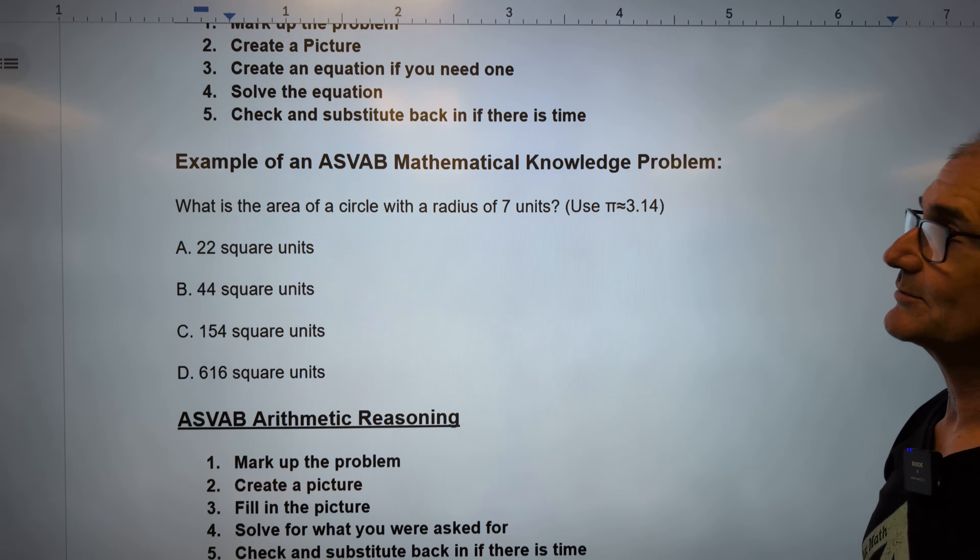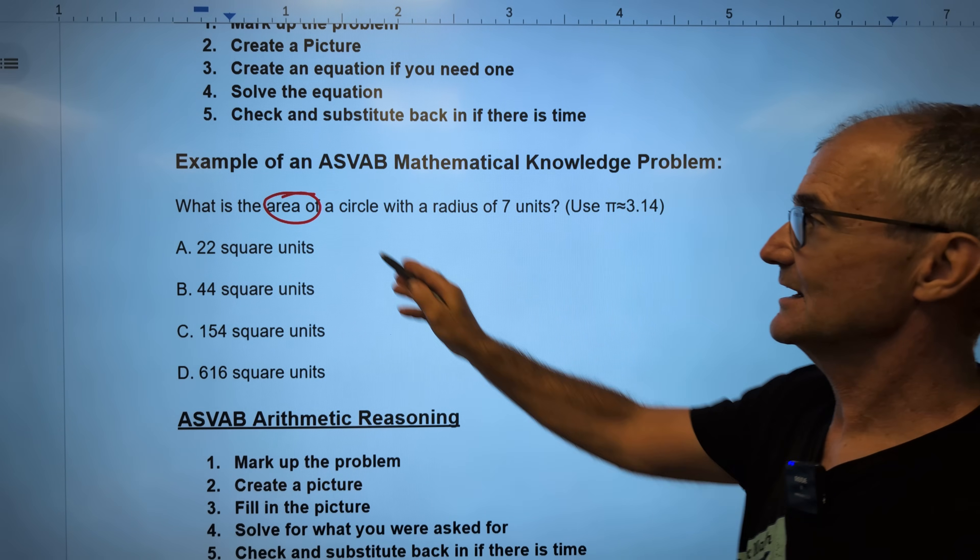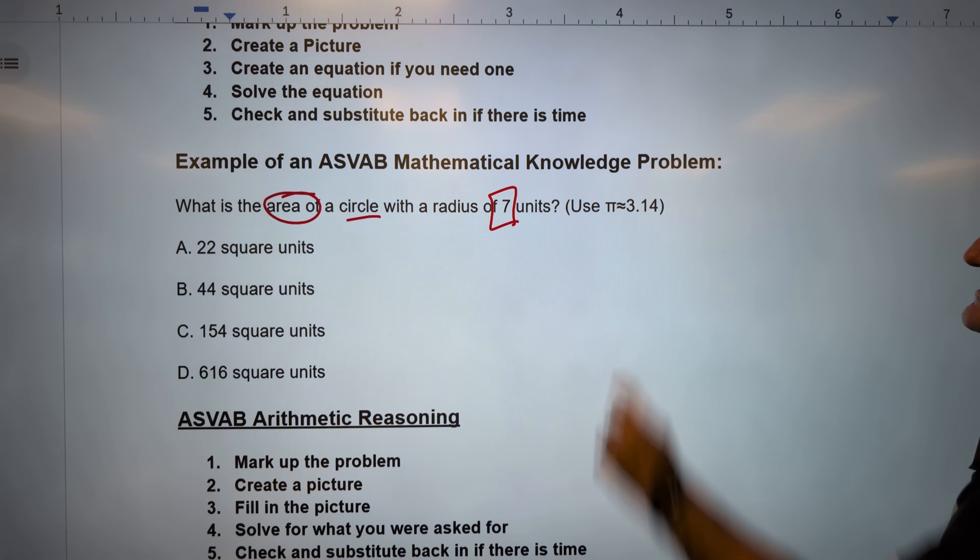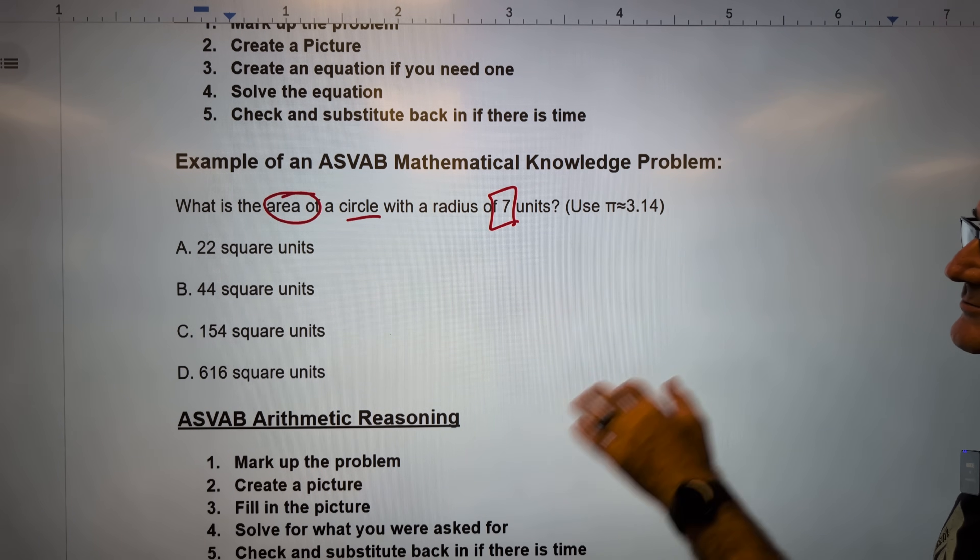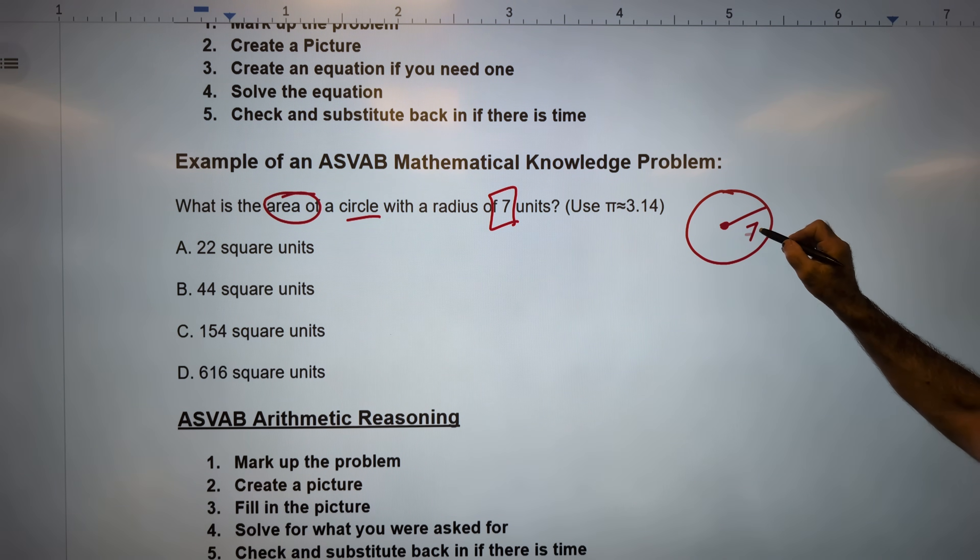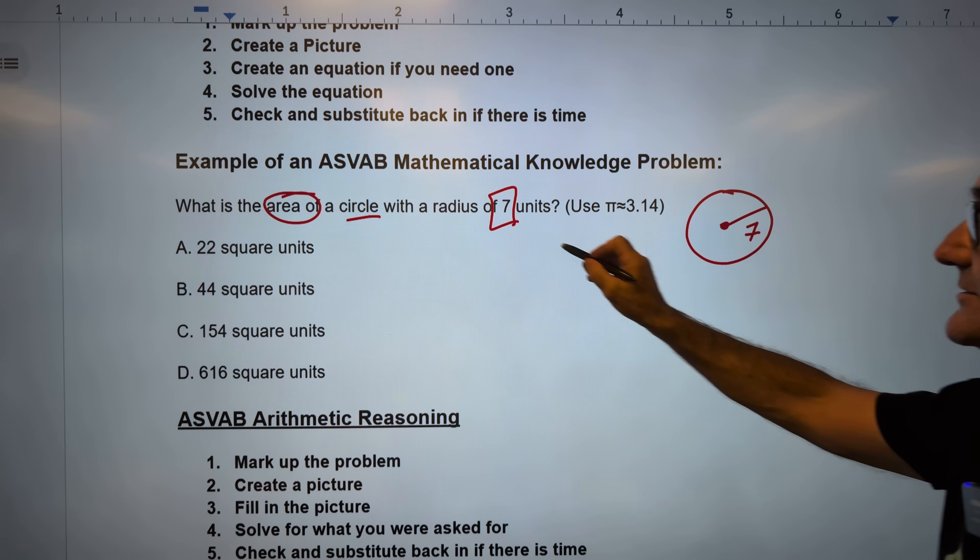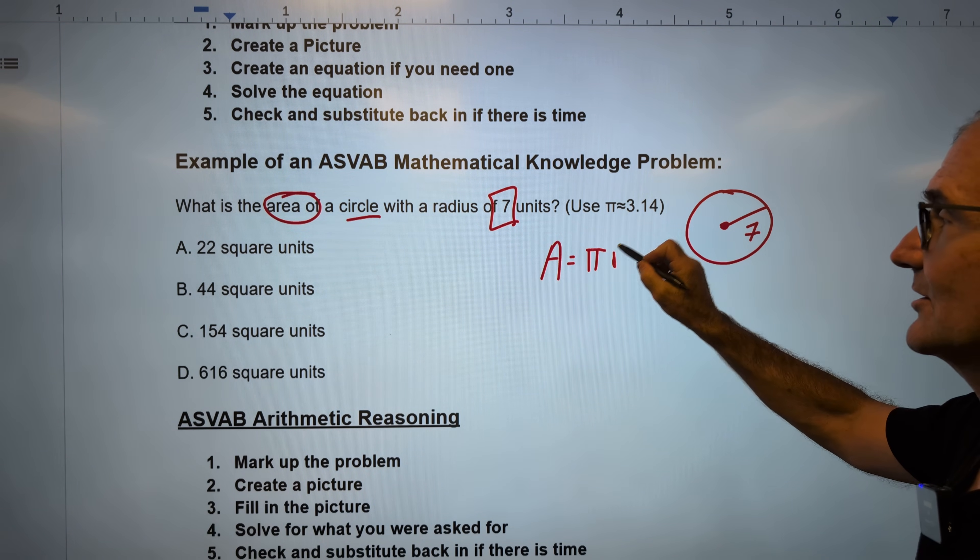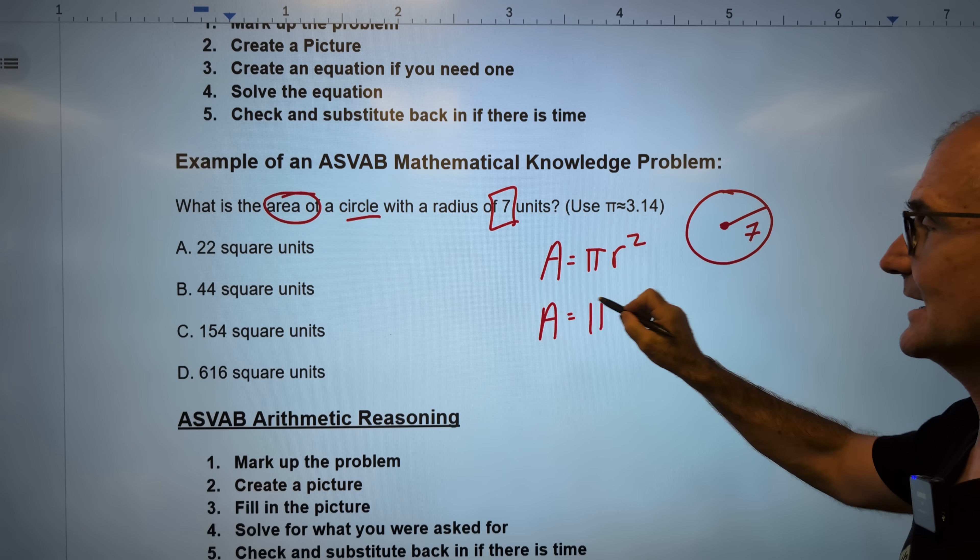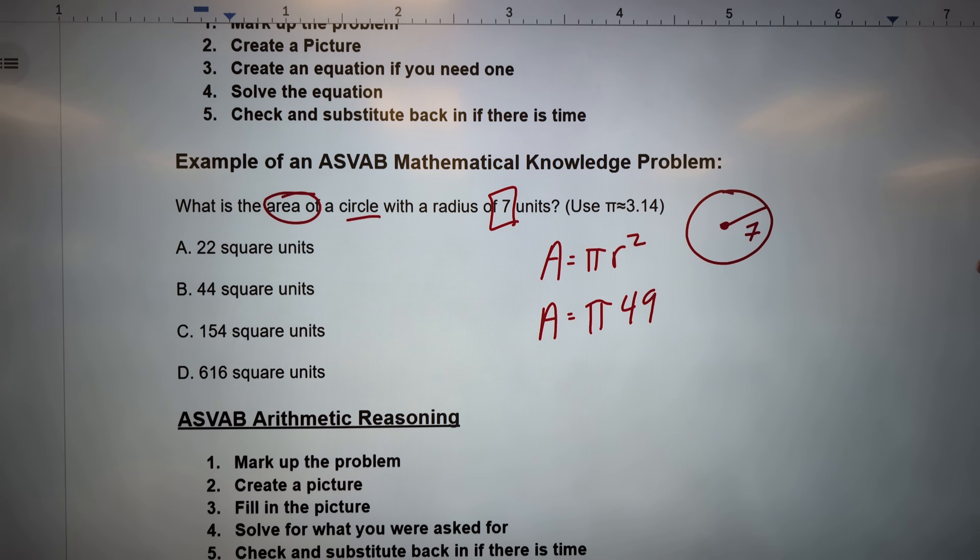Okay. Step one, mark up the problem. What is the area? So I got to make sure I'm looking for area, not circumference. The area of a circle with a radius of seven units using pi is equal to 3.14. So I've marked up my equation. My picture is going to look like that. It is a circle with a radius of seven. Step three, create an equation. Area of a circle is equal to pi r squared. And I know my r is 7, so the area of this circle is pi 7 squared. 7 times 7 is 49 pi.